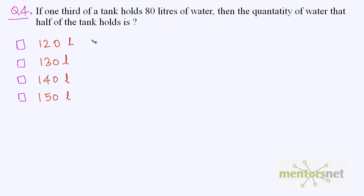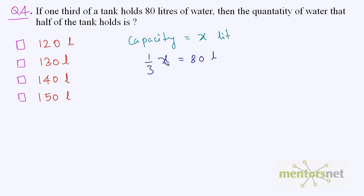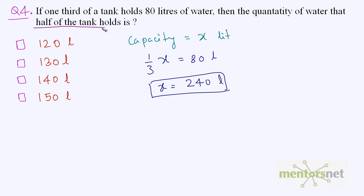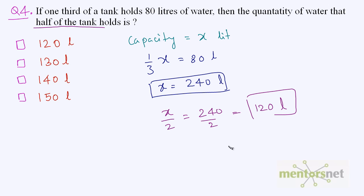Let us solve question number 4. One third of a tank holds 80 liters, and you are asked how much water the half of the tank holds. Let the capacity be x liters. One third of x equals 80 liters, so x equals 80 times 3, which is 240 liters. But half the capacity is asked: x divided by 2 equals 240 divided by 2, which equals 120 liters.